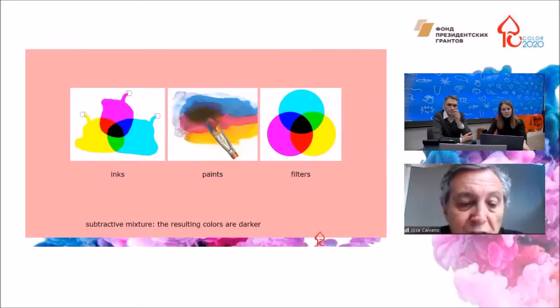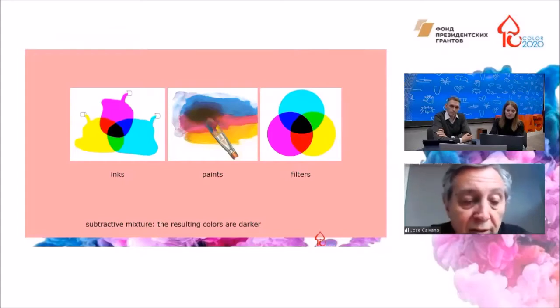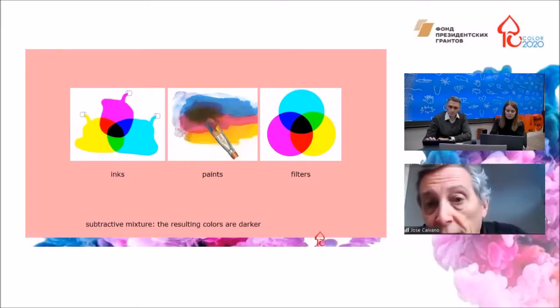This kind of mixture could be made with inks, paints, or overlapping thin layers that work as filters and selectively absorb some spectral components of the light that is reflected or transmitted towards the observer.